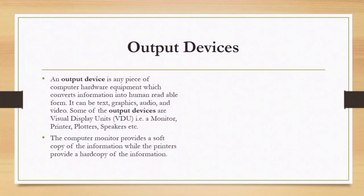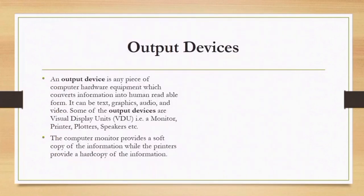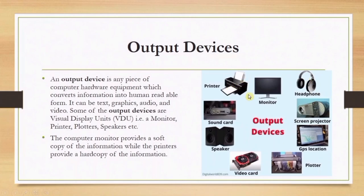Output devices: an output device is any piece of computer hardware equipment which converts information into human-readable form — it can be text, graphics, audio, and video. Some output devices include visual display units, monitors, printers, speakers, and more. The computer monitor provides a soft copy of the information while the printer provides a hard copy. Examples include a printer, a monitor, headphones, a sound card, a speaker, a video card, a plotter, a GPS, and a projector.